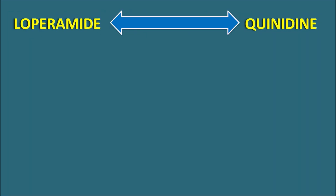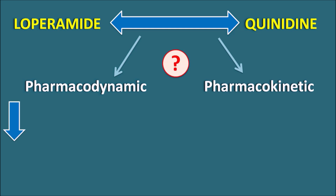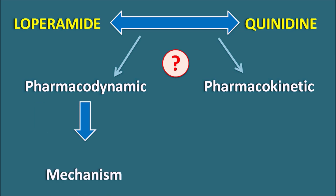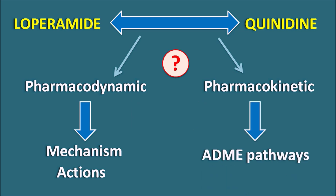Now what is the interaction between loperamide and quinidine? Drug interactions may be classified into two types: pharmacodynamic interactions or pharmacokinetic interactions. Pharmacodynamic interactions involve drugs interacting at the mechanism of action, meaning they share a similar target. Pharmacokinetic interactions result from interaction of two drugs at the ADME pathways — absorption, distribution, metabolism, and excretion. Let us check which type of interaction is present between loperamide and quinidine.